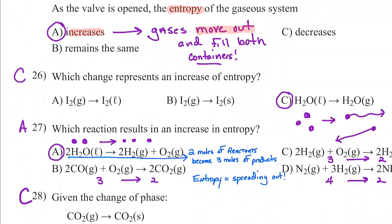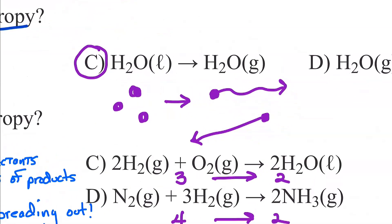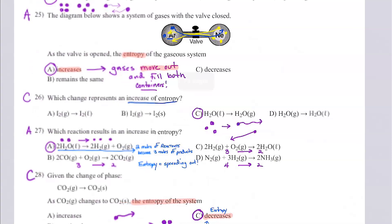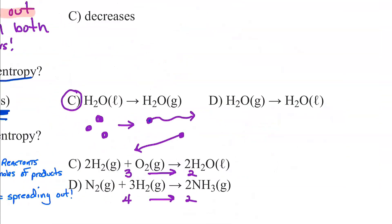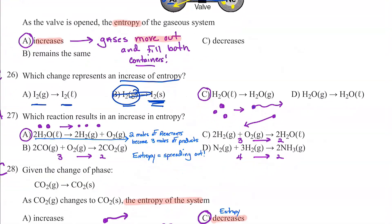Number twenty-six: where is there an increase in entropy among these phase changes? We're looking for where we go from solid to liquid to gas. Choice C — liquid to gas — is spreading out more. The other choices go the other way: a gas going to a liquid means you're compacting and putting molecules together, going against entropy. A gas going to a solid goes even more against entropy — we're putting things in ordered structures. Only C is spreading out, so the answer is C.